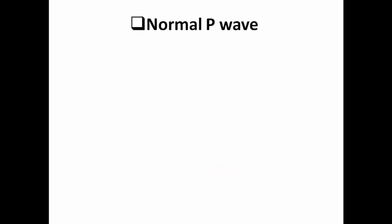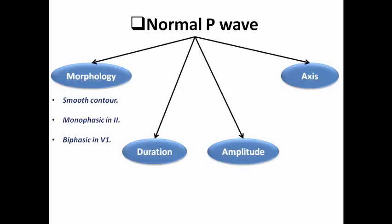The normal P wave has several criteria. Regarding morphology, it has a smooth contour, is monophasic in lead 2, and is usually biphasic in V1 under normal conditions. Regarding the axis, it ranges from 0 to +75 degrees, because atrial depolarization originates from the SA node — the normal pacemaker of the heart — and travels toward the left lower quadrant.